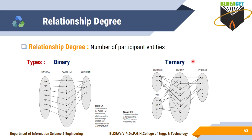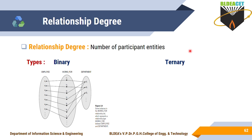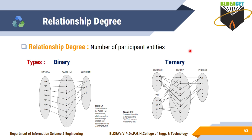When more than one entity type is involved in a relationship type, you can use the general term N-ary. Binary means N equals 2; ternary means N equals 3. So when multiple entity types are involved in general, you call it N-ary.